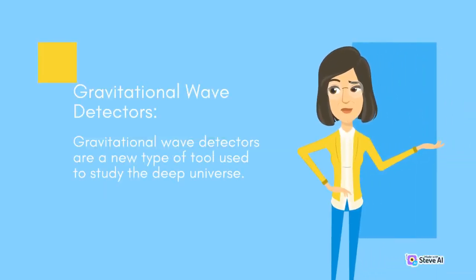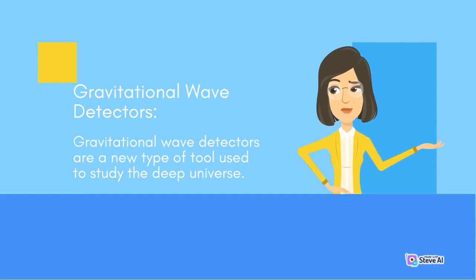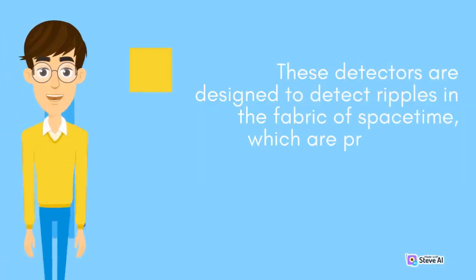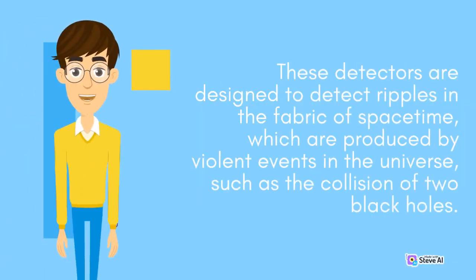Gravitational wave detectors are a new type of tool used to study the deep universe. These detectors are designed to detect ripples in the fabric of space-time, which are produced by violent events in the universe, such as the collision of two black holes.